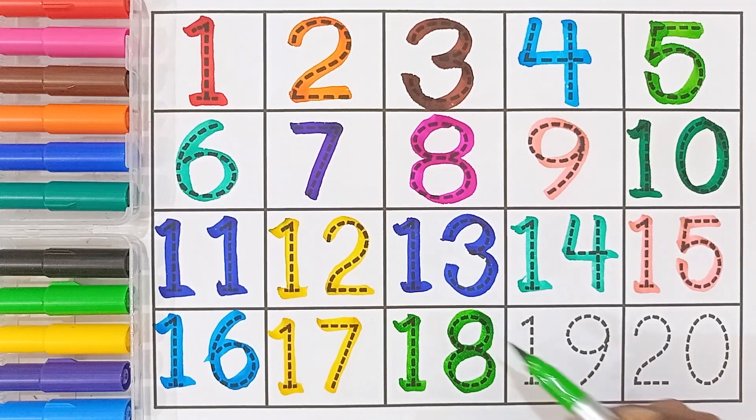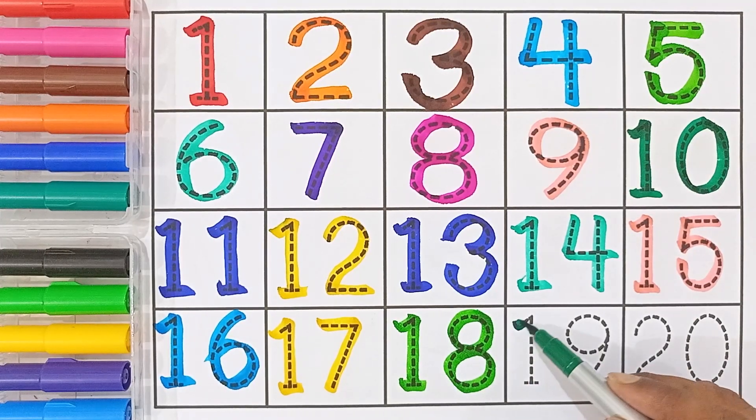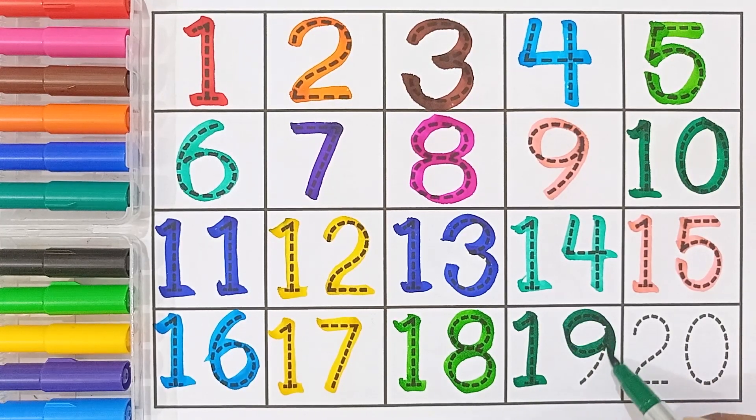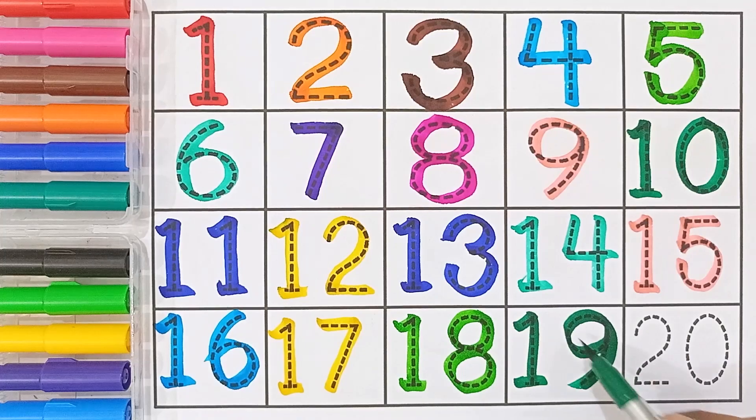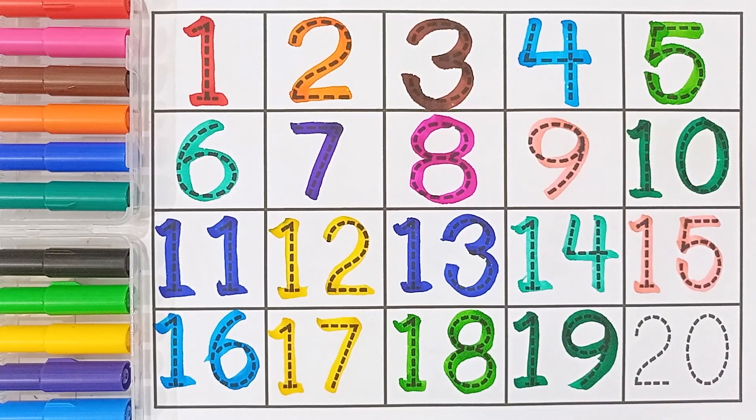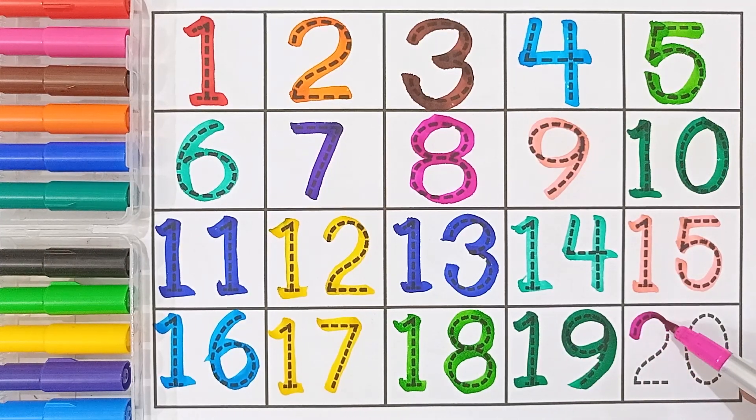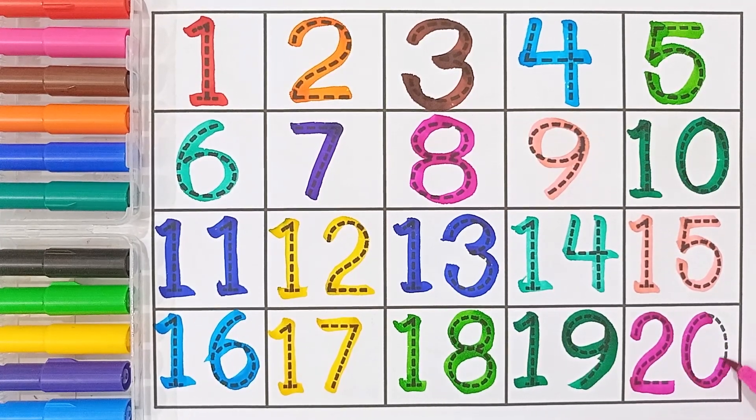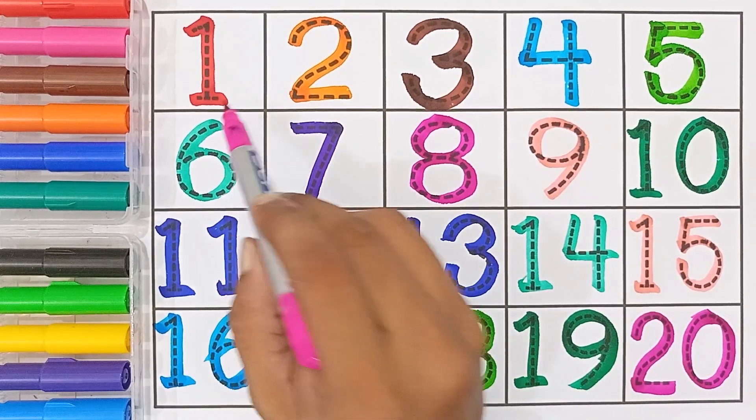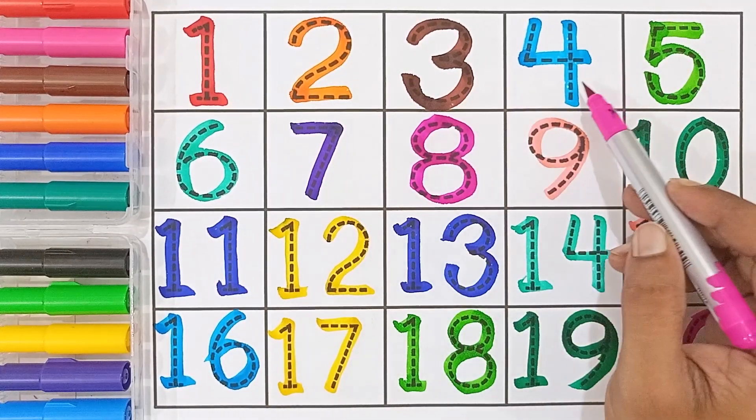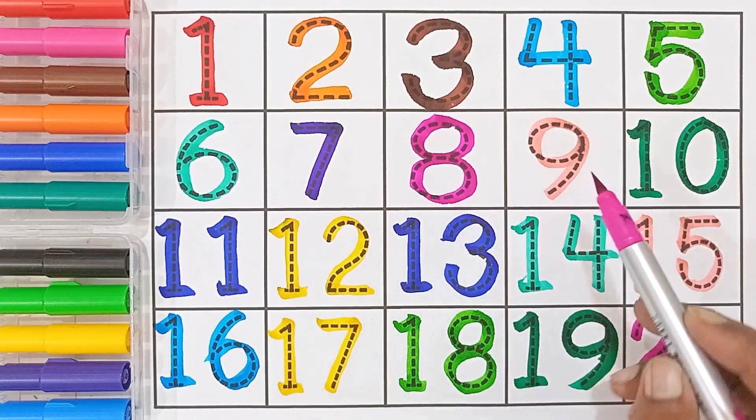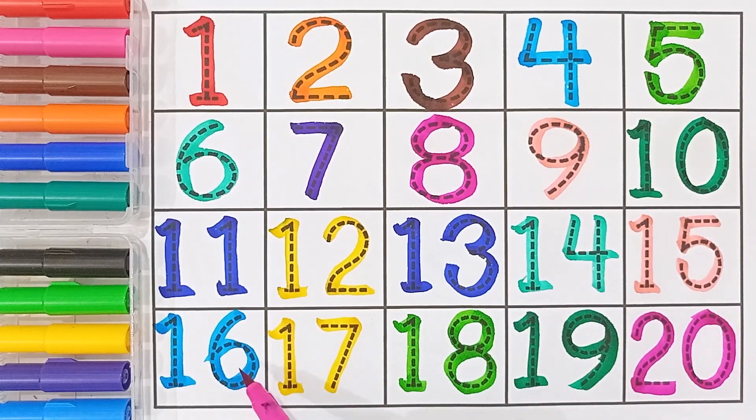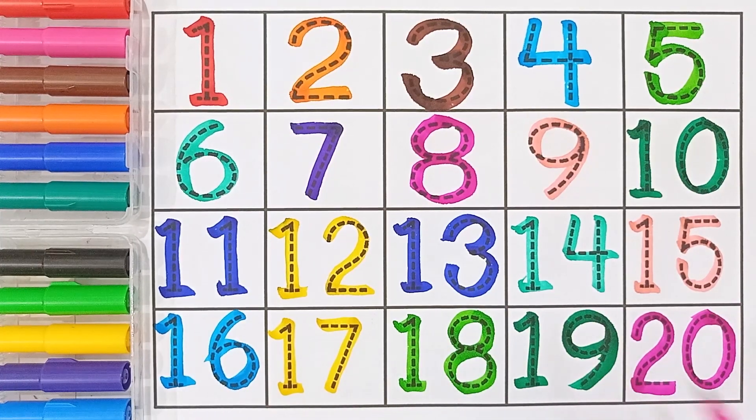Eighteen. Nineteen, one and nine. Nineteen. Twenty, two and zero. Twenty. One, two, three, four, five, six, seven, eight, nine, ten, eleven, twelve, thirteen, fourteen, fifteen, sixteen, seventeen, eighteen, nineteen, twenty.